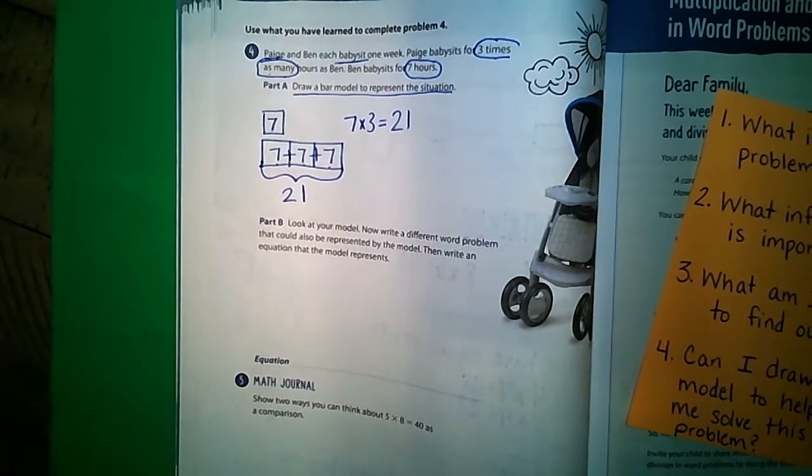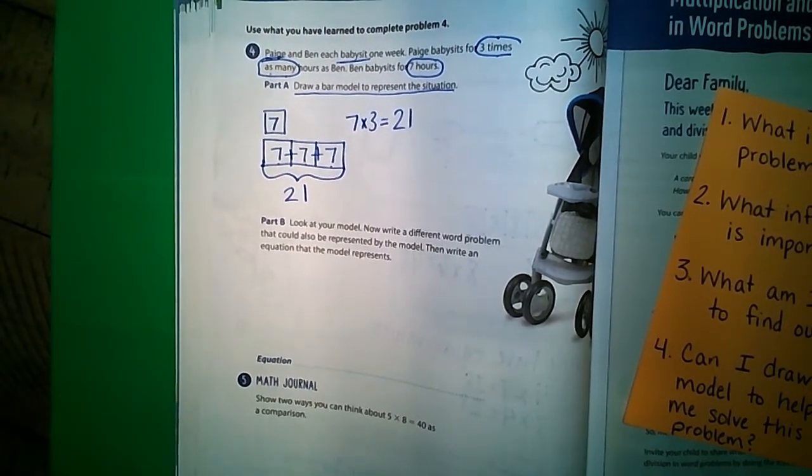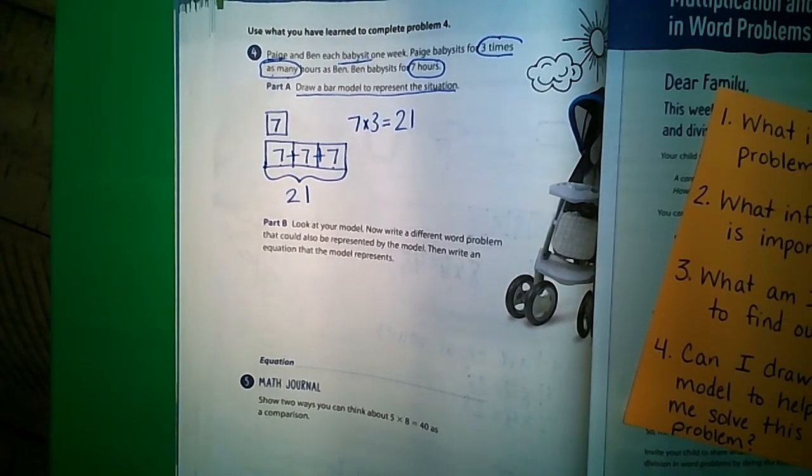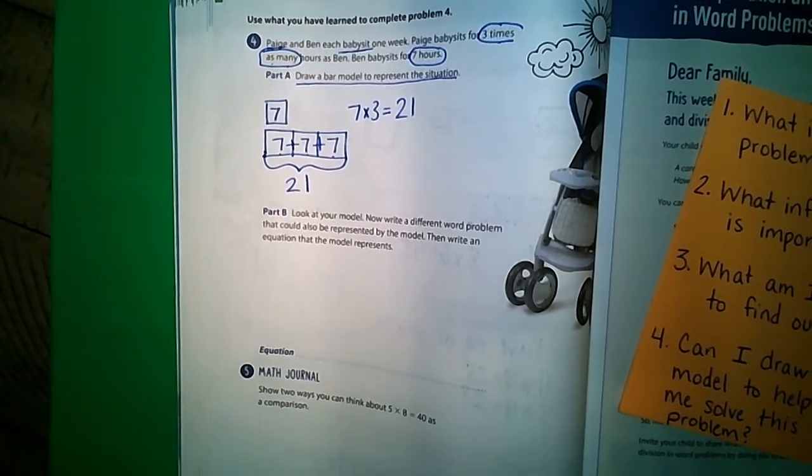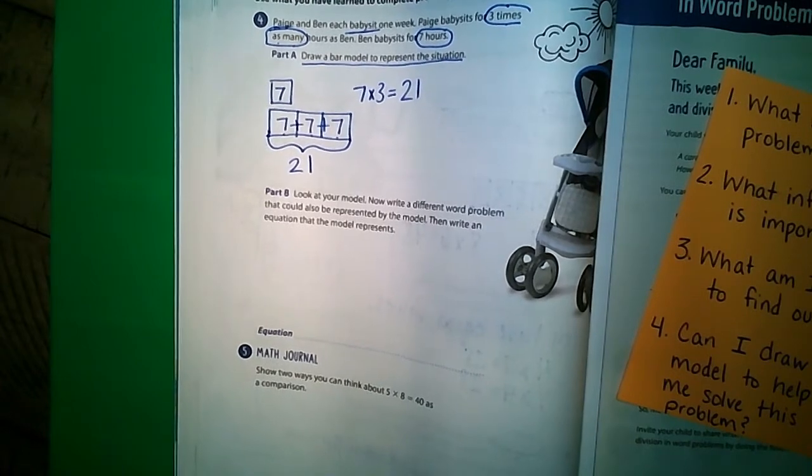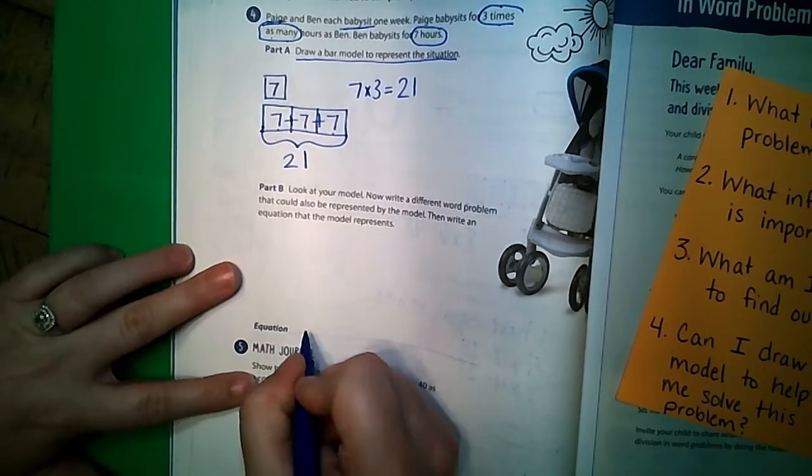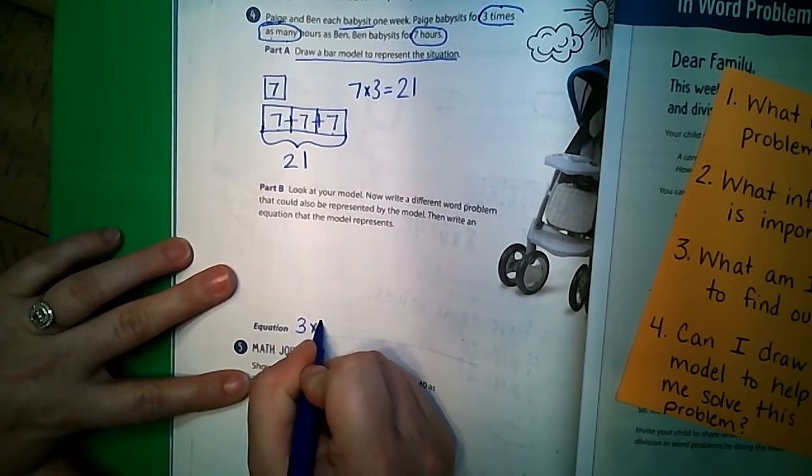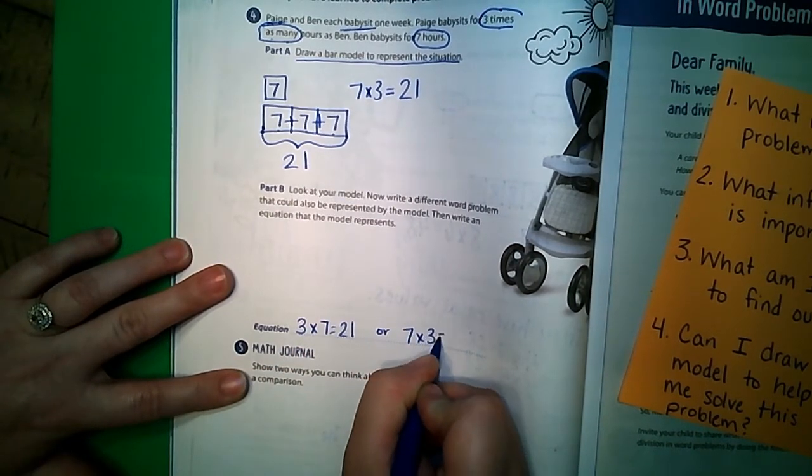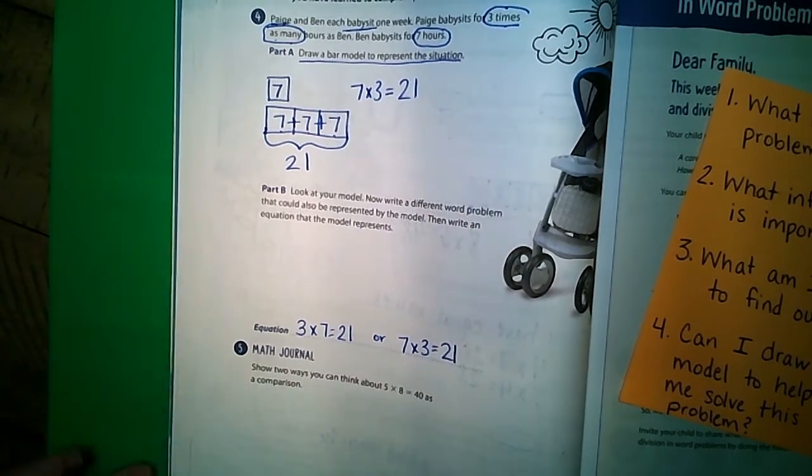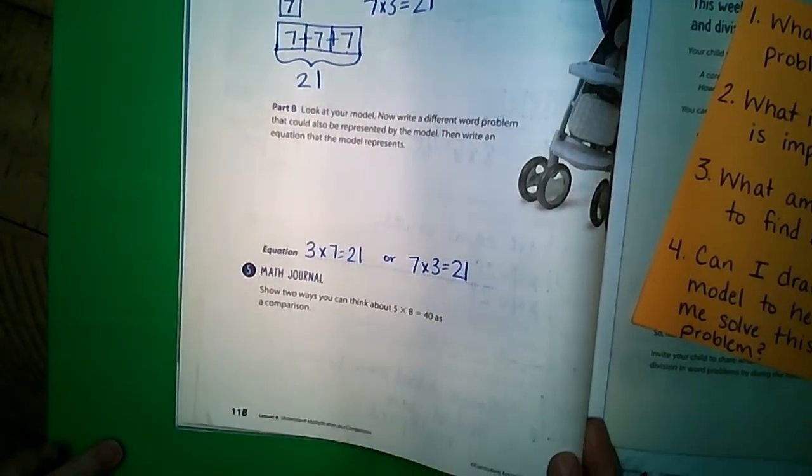Then on part B it says look at your model, now write a different word problem that can also be represented by the model, then write an equation that that model represents. This is going to be, all of you are going to have something different here, so I recommend having your parents take a look at this one. But your equation should all be the same. It should either be three times seven equals 21, or seven times three equals 21.